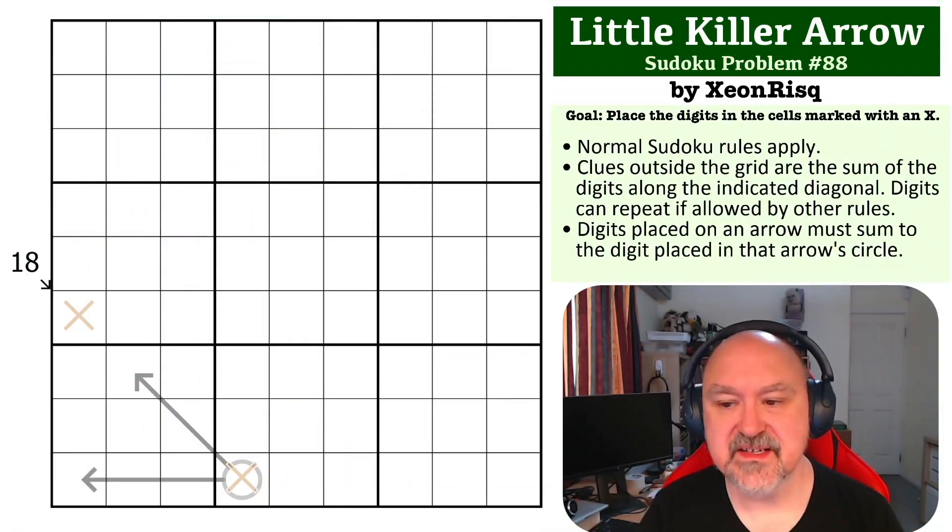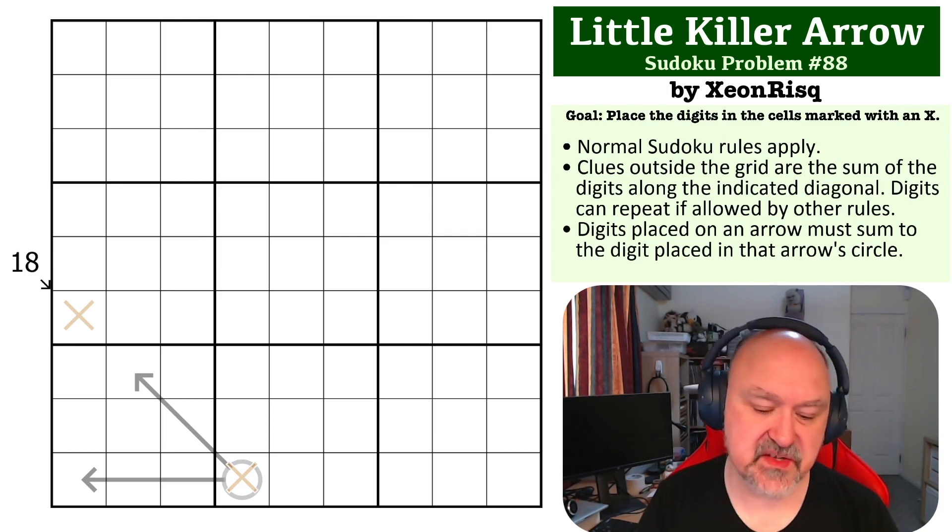Hey, this is Bremster, and this is number 88 in the Sudoku Problems series. This is a little killer arrow problem by Xeon Risk, and this one has been rated medium by the testers.